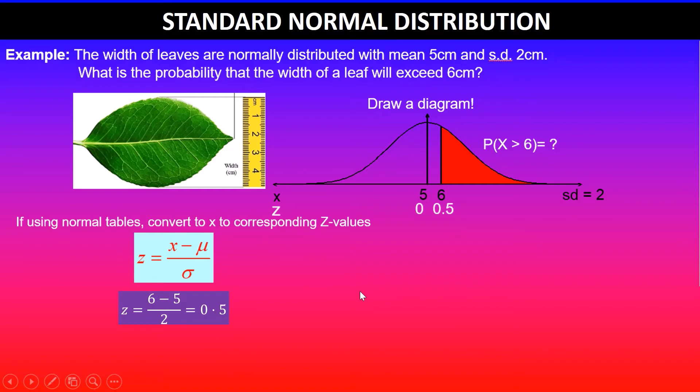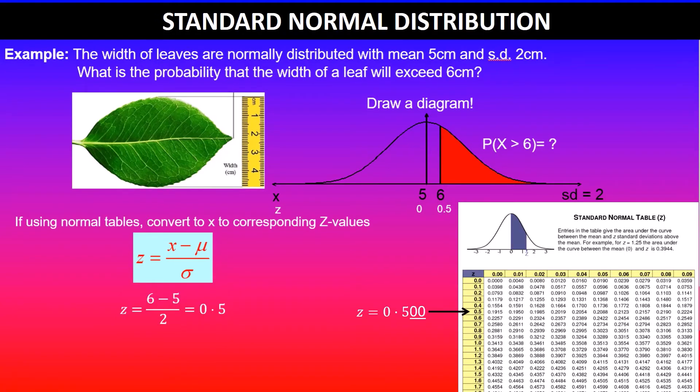Using this value, we can now use the standard normal table which has z values like 0.1, 0.2, and so on. We're looking for z = 0.5. We look across and then vertically go to 0.00 because it's exactly 0.5, which is the same as 0.50.